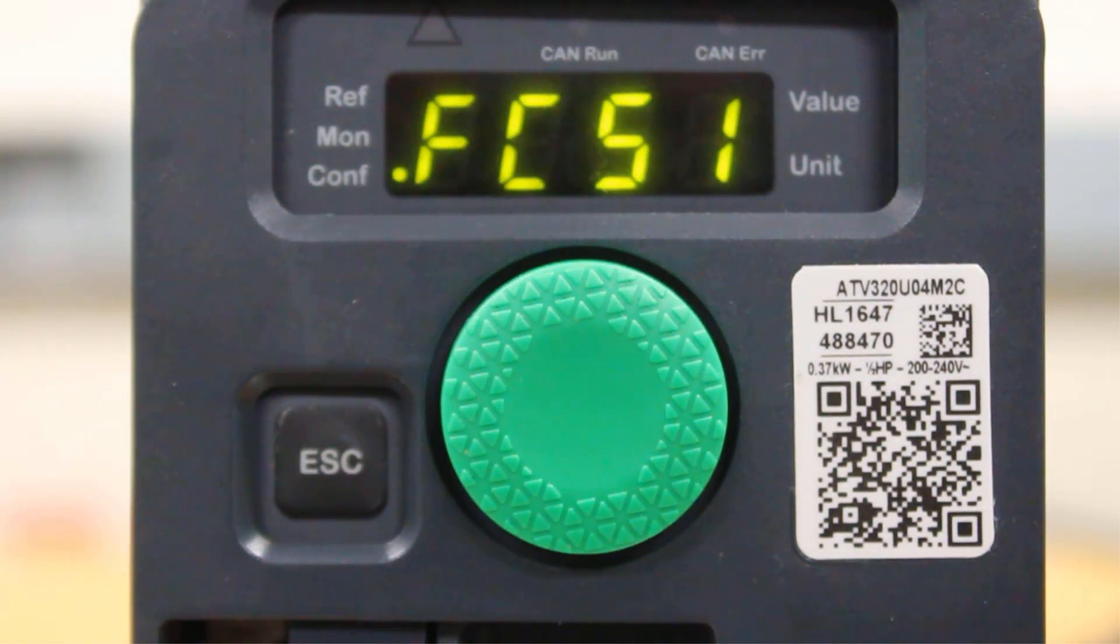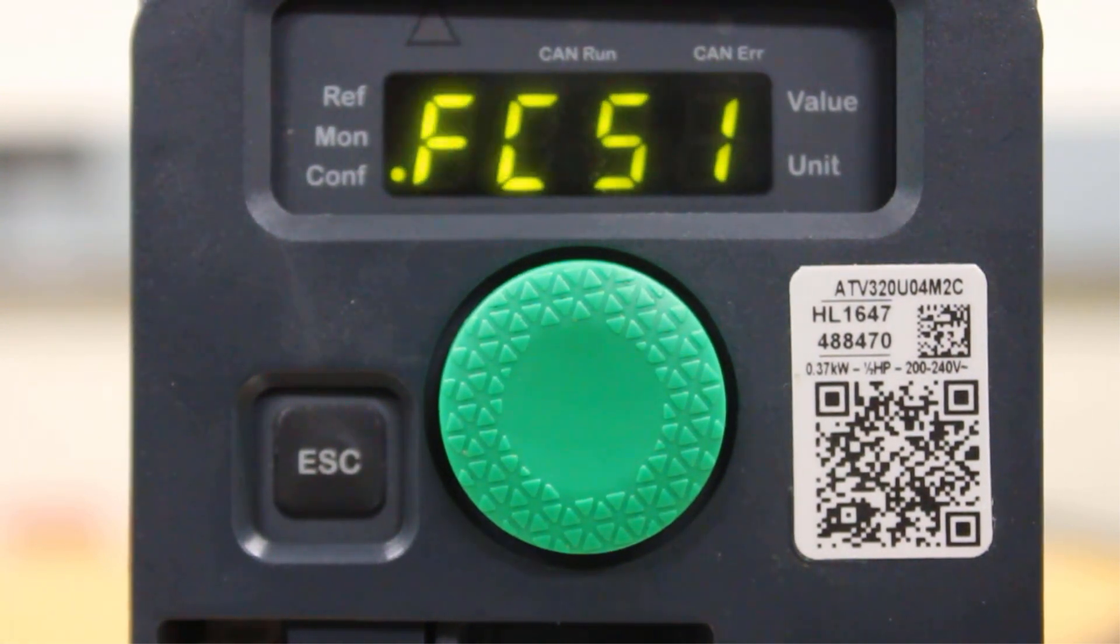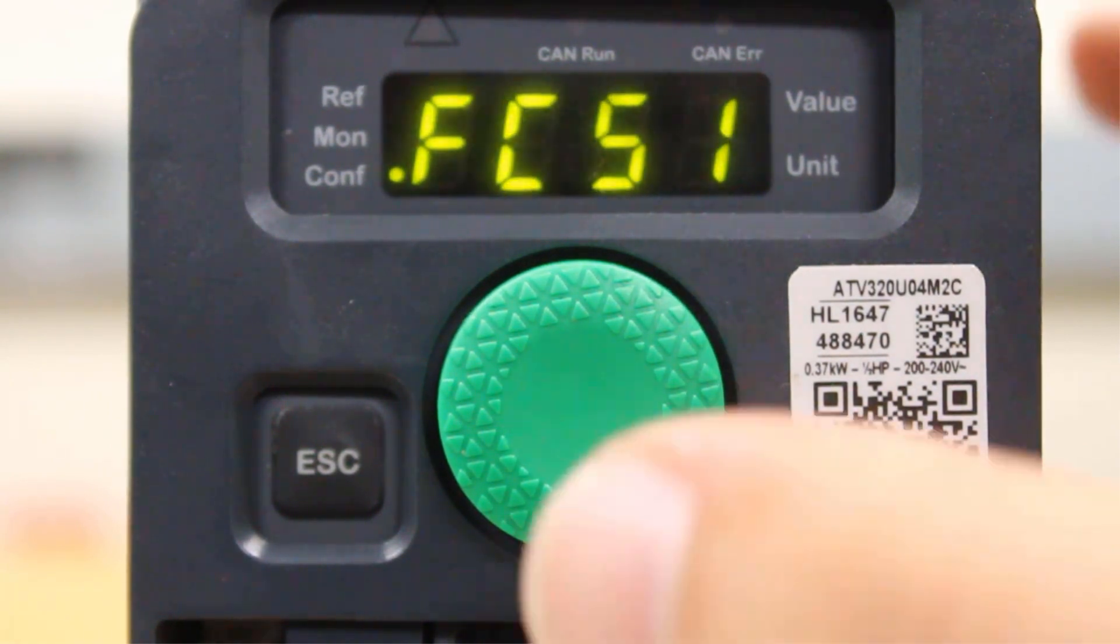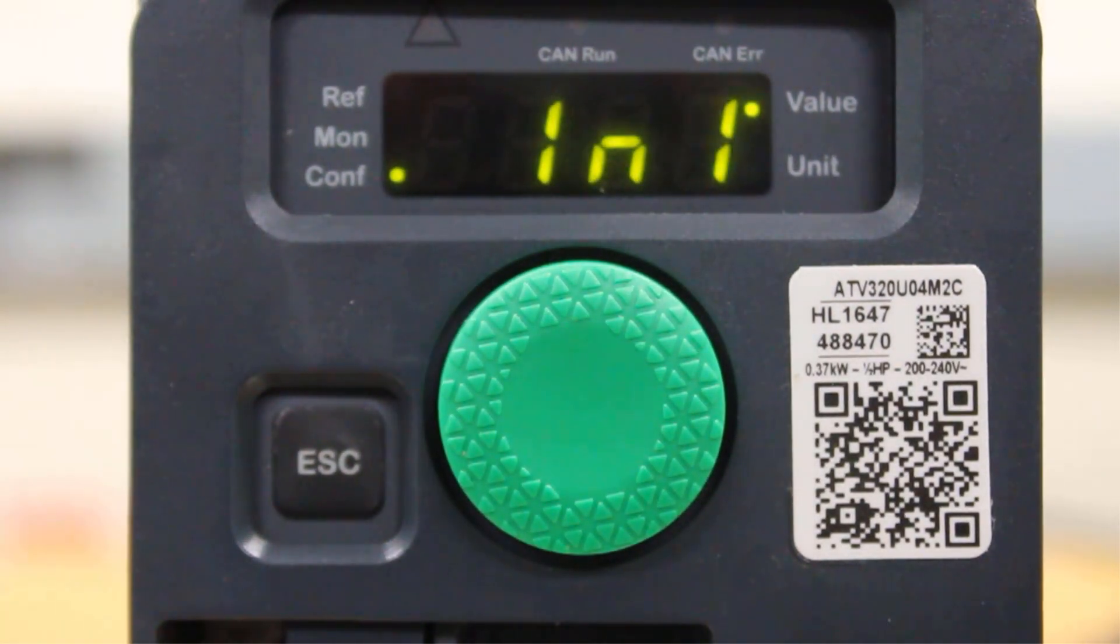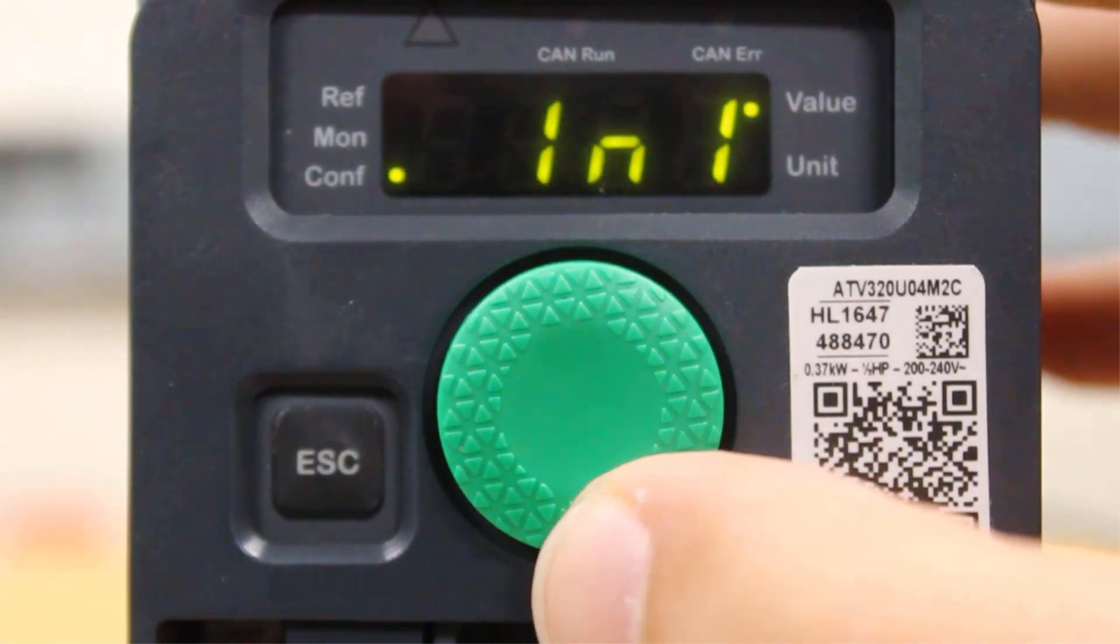Now the next thing you want to do is go into this parameter. Let's go ahead and enter on this parameter first of all. The parameter you want to find for the first configuration is CFG1.